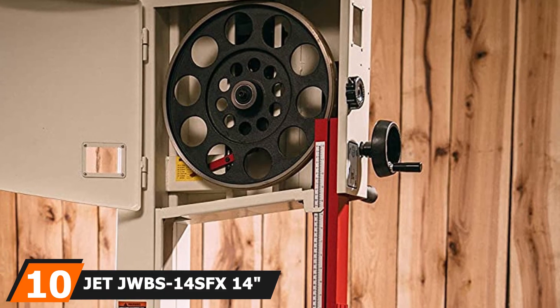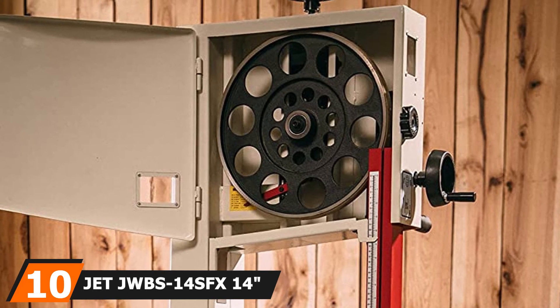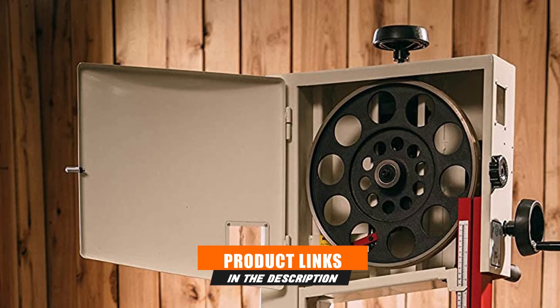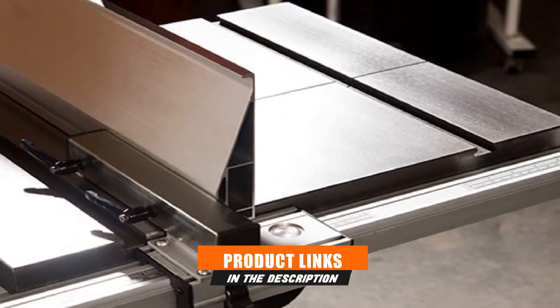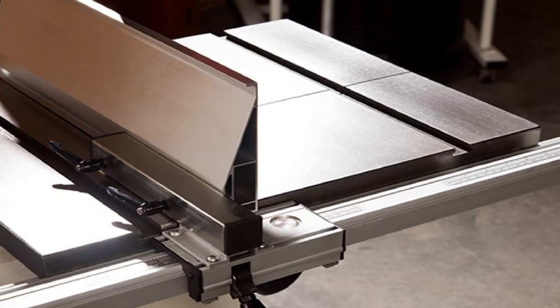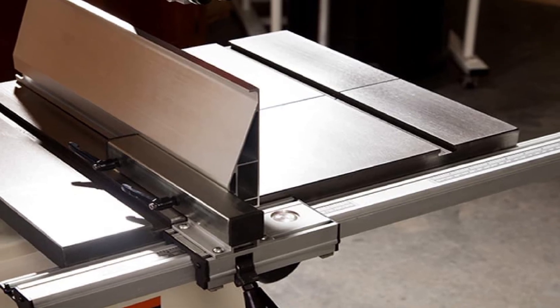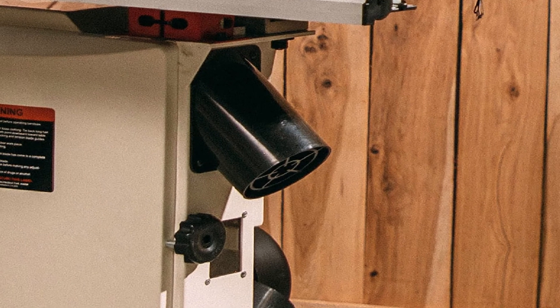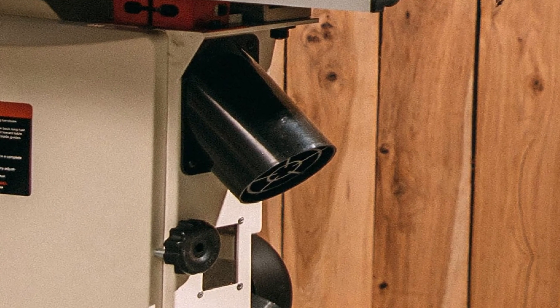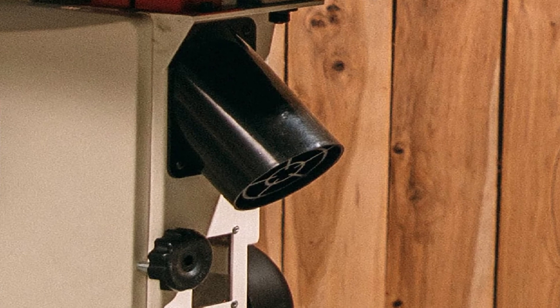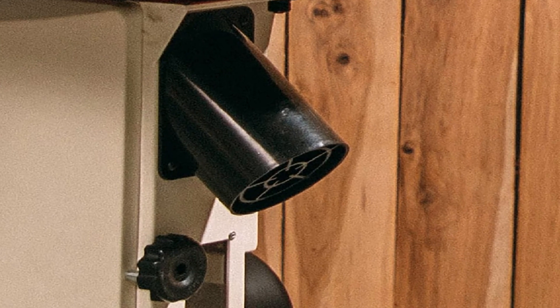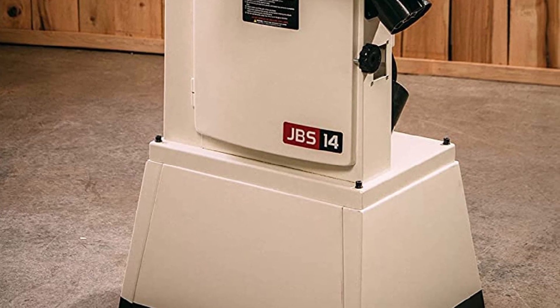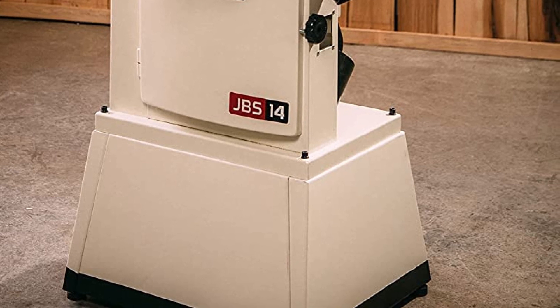Finally, the number 10 position is dominated by JET JWBS-14SFX 14 steel frame bandsaw. Talking about bandsaws, some of the best ones are made by JET. Run some wood stocks through this JET JWBS-14SFX 14-inch bandsaw and you'd surely agree with us. Weighing over 300 pounds, this bandsaw is a heavy-duty machine designed and constructed with high-quality tubular steel. The 14-inch wheels provides enough leverage and power to saw through even the hardest of woods, and with over 13 inches of resaw capacity, you can be sure that it can handle large workpieces conveniently.